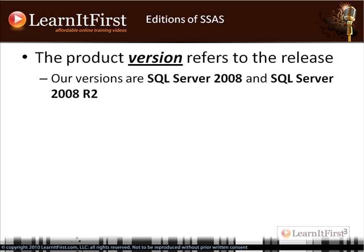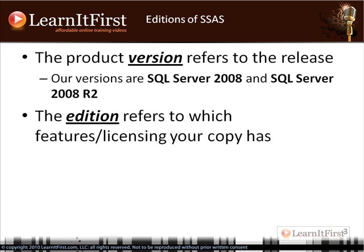There are two very distinct terms — version and edition — and we need to understand the difference. Version refers to the release; in this course we're dealing with SQL Server 2008 and SQL Server 2008 R2. Edition refers to Enterprise Edition or Standard Edition — essentially the features that a given copy supports. So version is SQL Server 2008 or R2, and edition is Standard, Enterprise, Web, and so on.